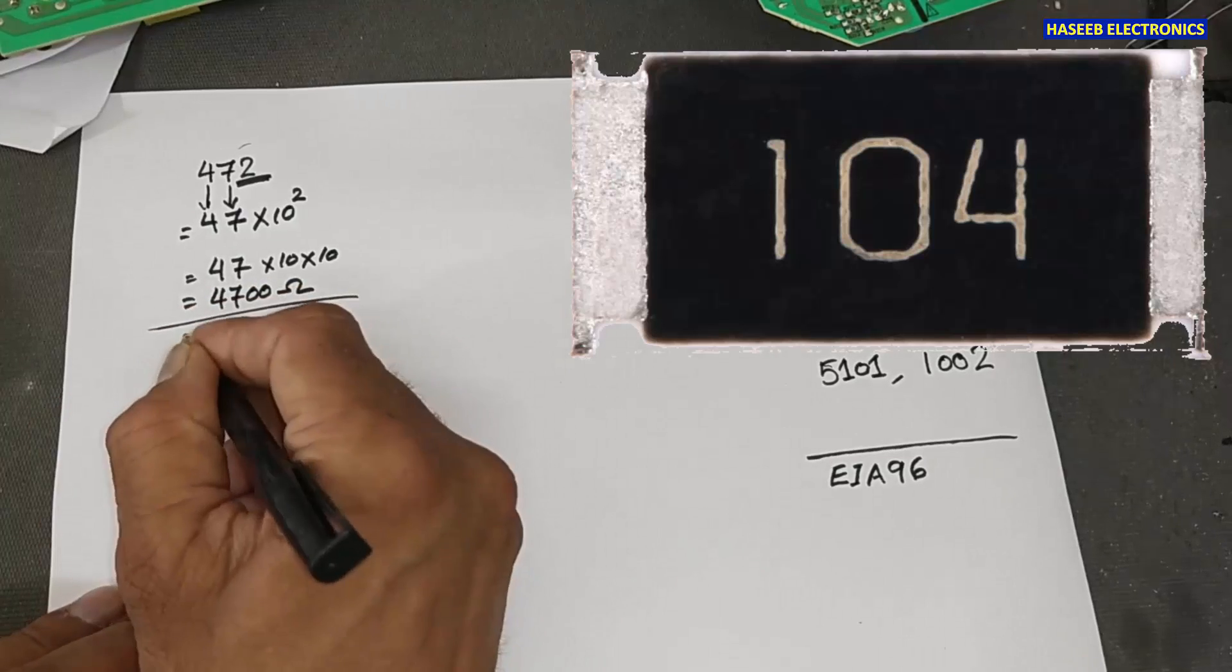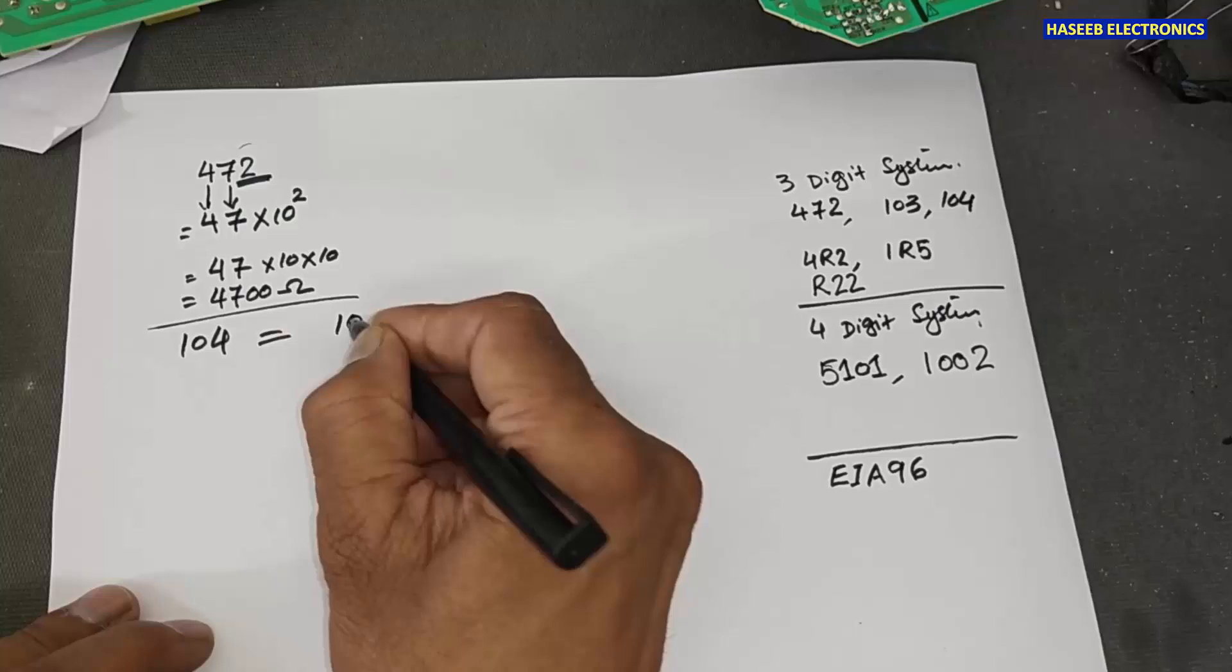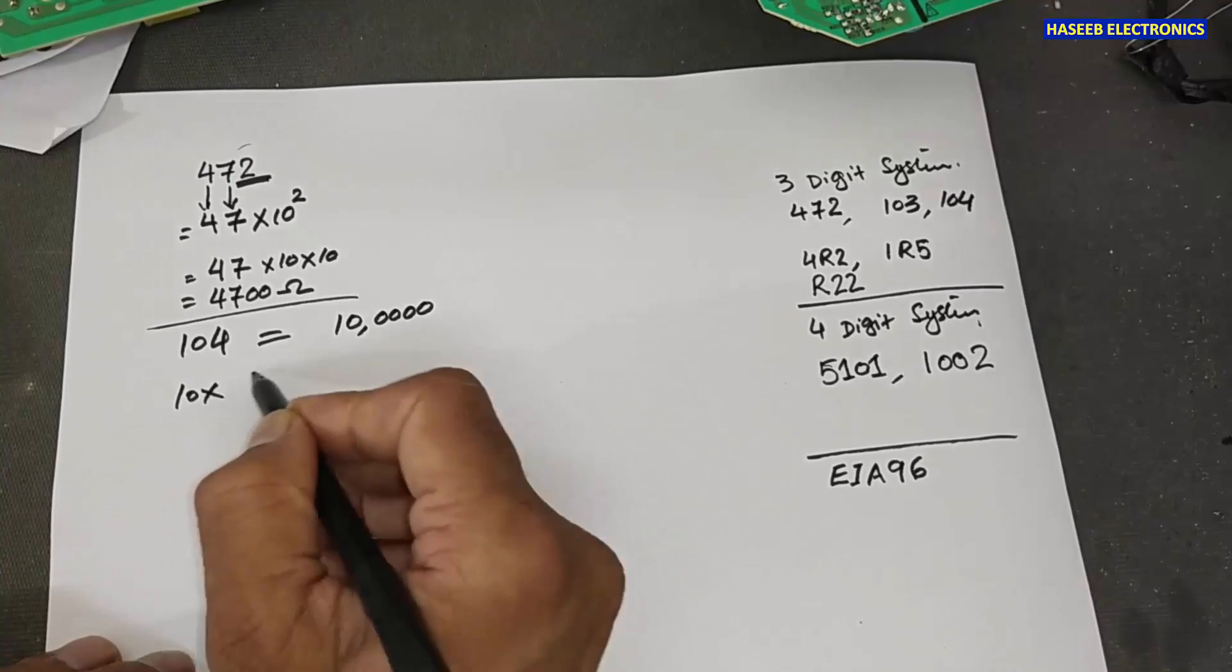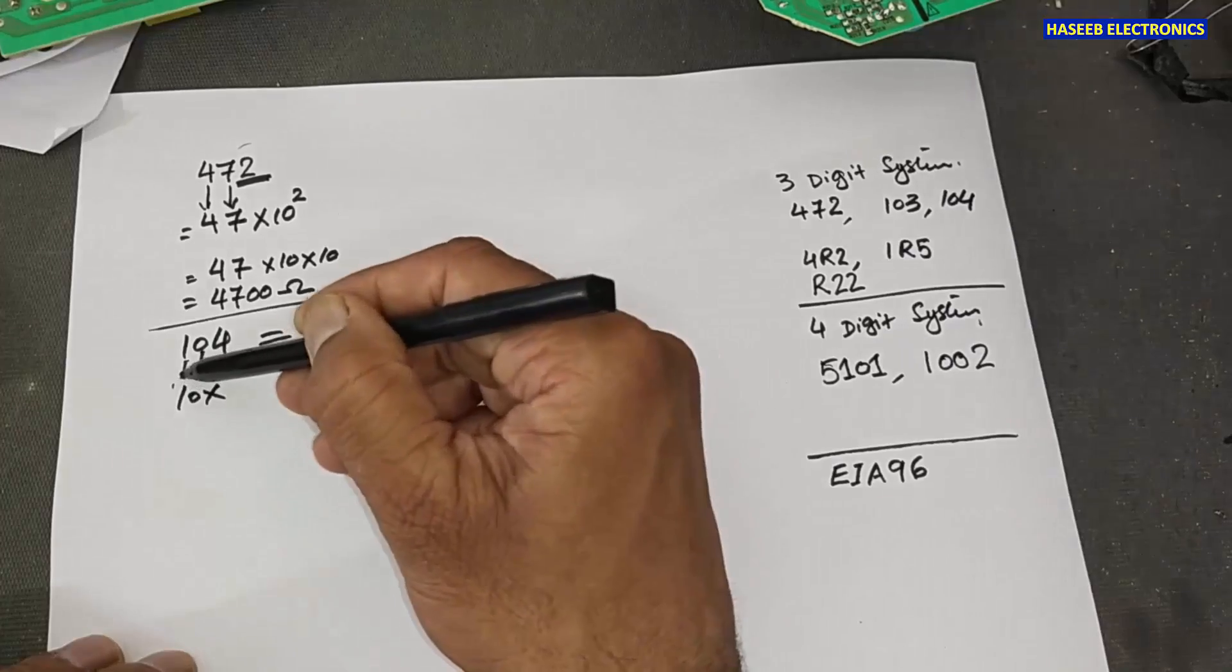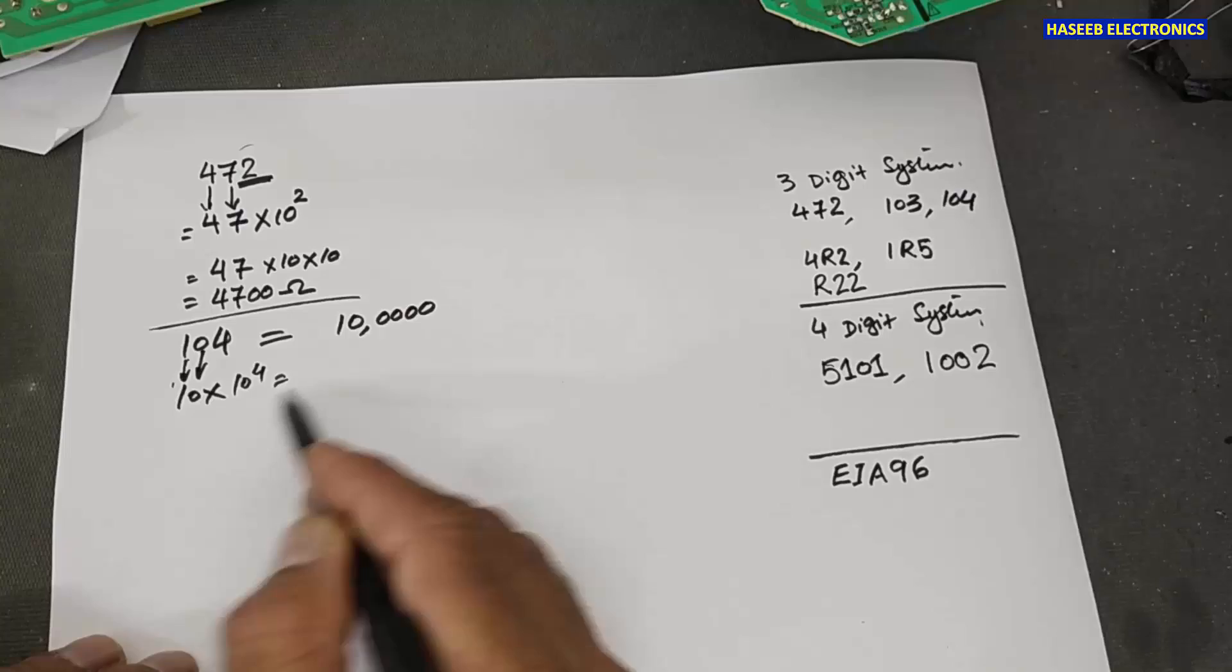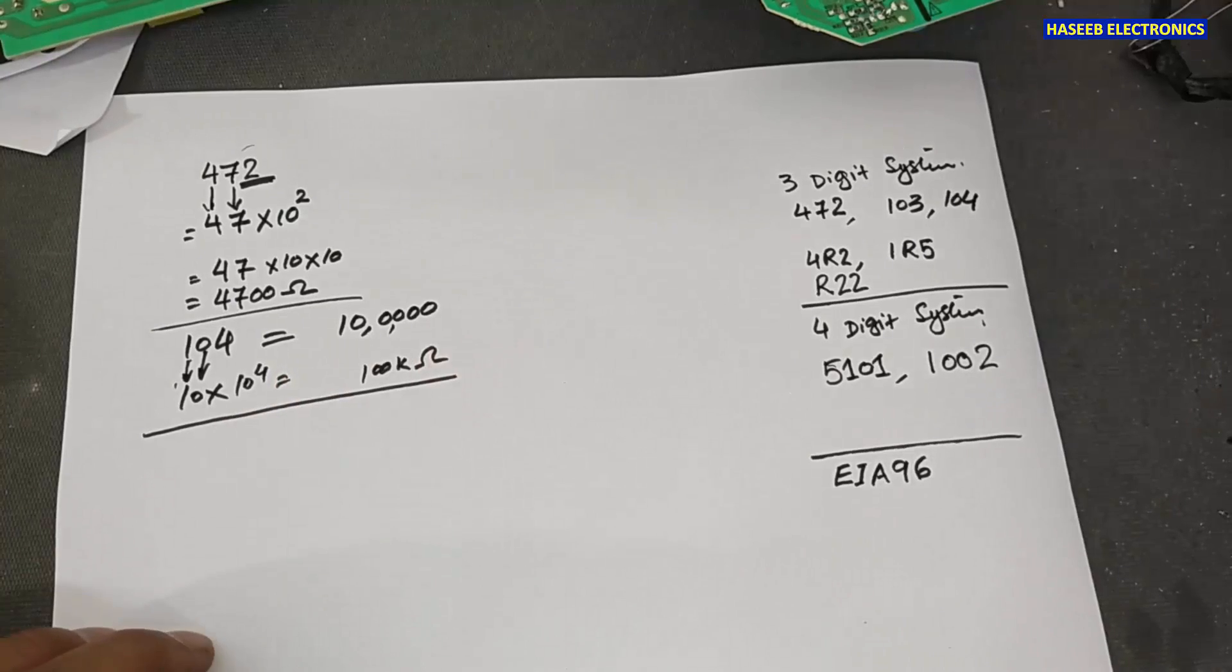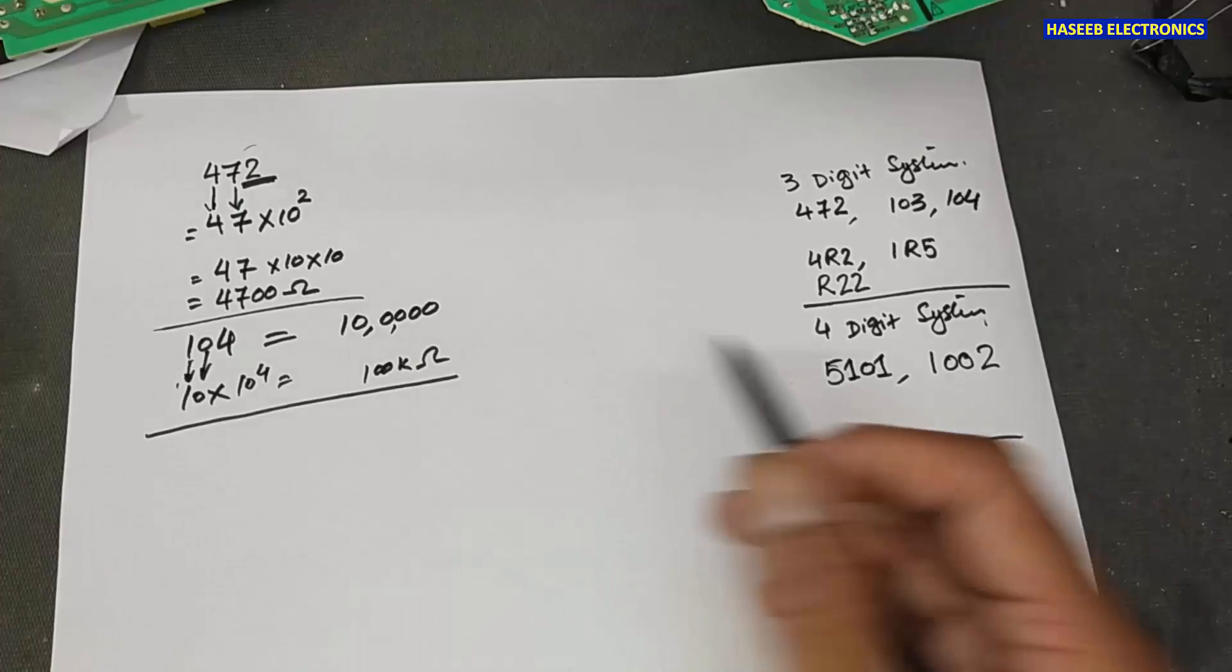If it is 104, 1, 0, 4, we can write 1, 0 and 4 zeros. Or we can write 10 raised to power 4. It will become the same value. Its value will be 100K. This is the resistor value. And then we will see wattage value. This is three-digit system.